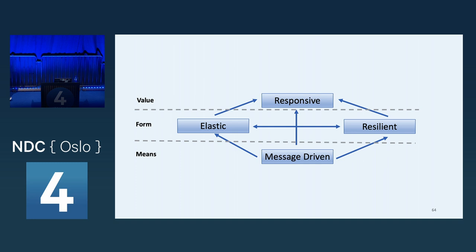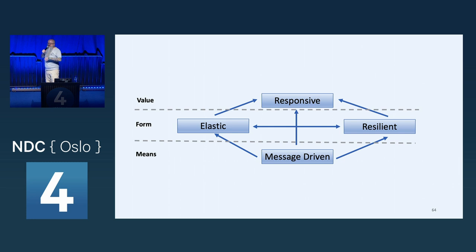Question about keeping track of nodes and dead letter queues: observability is what you need for any distributed system — logs, metrics, and especially traces. Traces let you see spans and activities and track where things move inside a workflow. If you're going to use this approach, you need to invest in observability.